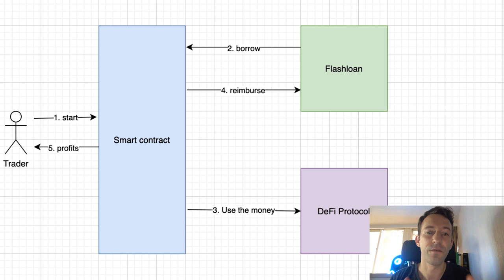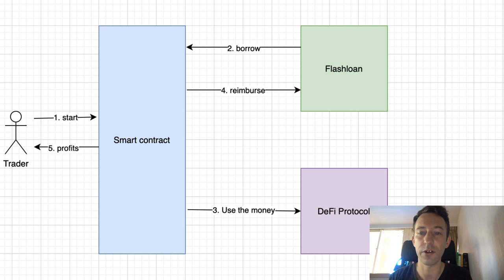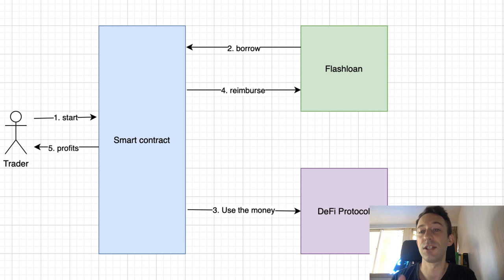Here's how it works. First, you need to deploy a smart contract — it doesn't make any sense to take a flash loan directly from your wallet. As a trader, you will execute a function on your smart contract, and then that smart contract is going to borrow money from the flash loan, which is usually part of a DeFi protocol like Uniswap or Aave. You can borrow as much money as there is in that DeFi protocol's liquidity pool.